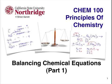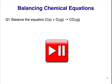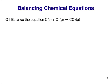Here's your first question. Balance the equation C plus O2 making CO2. Pause the video here and work out the answer. The first step is to count the number of each kind of atom on both the left and the right side of the arrow.